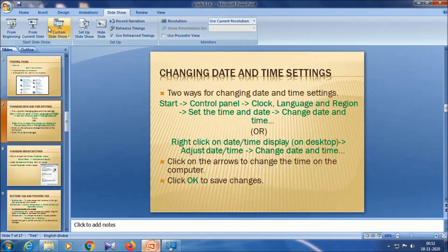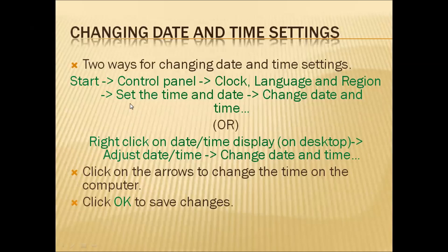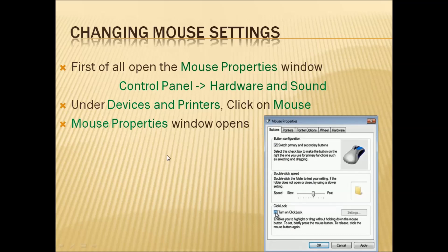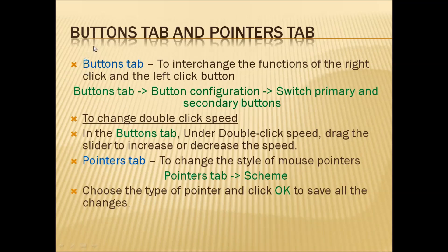Using the second way also, we have changed the date and time. These are the two ways to change the date and time settings in your computer. Now we are going to change the mouse settings. For that, we open the mouse properties window by going to control panel, clicking on 'Hardware and Sound', and under 'Devices and Printers', clicking on Mouse.